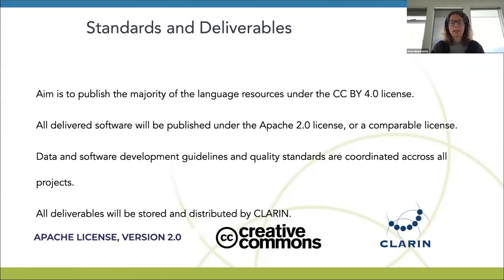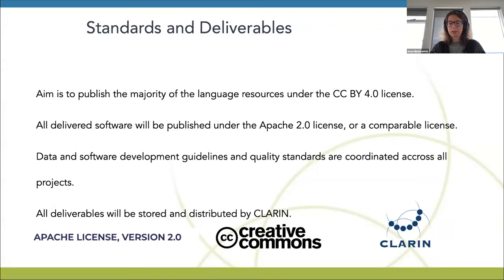Accessibility of the resources is key for them to be of use. It is also very important that users are allowed to include the resources and software tools in their commercial products as well as in research. The aim is to publish the majority of the language resources under the CC BY 4.0 license. This is not in every case possible, but at least the results like models, translation models, language models, etc., are published under an open license. All delivered software without exception is published under the Apache 2.0 license or a comparable license.